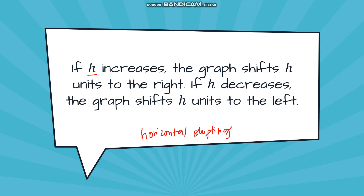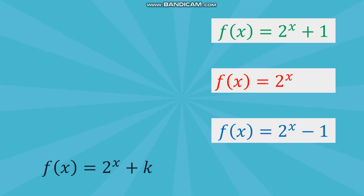To summarize: if h increases, the graph shifts h units to the right; if h decreases, the graph shifts h units to the left. Now let's look at another set of functions following the form f(x) = 2 raised to x plus k — here there is no h, only k. The values of k are: 1 for the first function, 0 for the second, and negative 1 for the third.